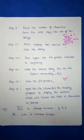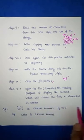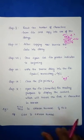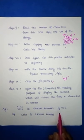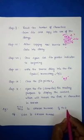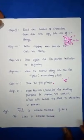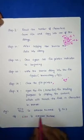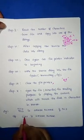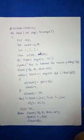In step ten, open the same file again for reading to display the content, which will show the first characters in reverse order. For example, if the string is "this is Satish Kumar" and N equals three, that means you are taking four characters (indices 0, 1, 2, 3). So the output will be S-I-H-T followed by the rest of the string. Let's see the program now.